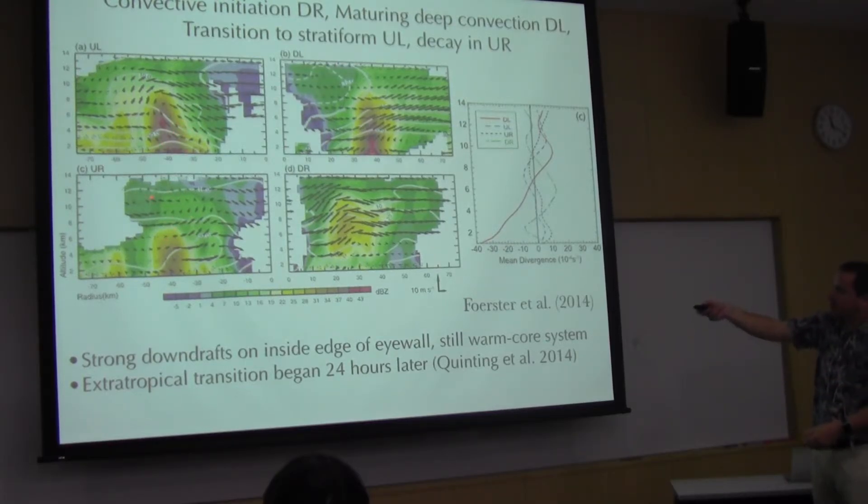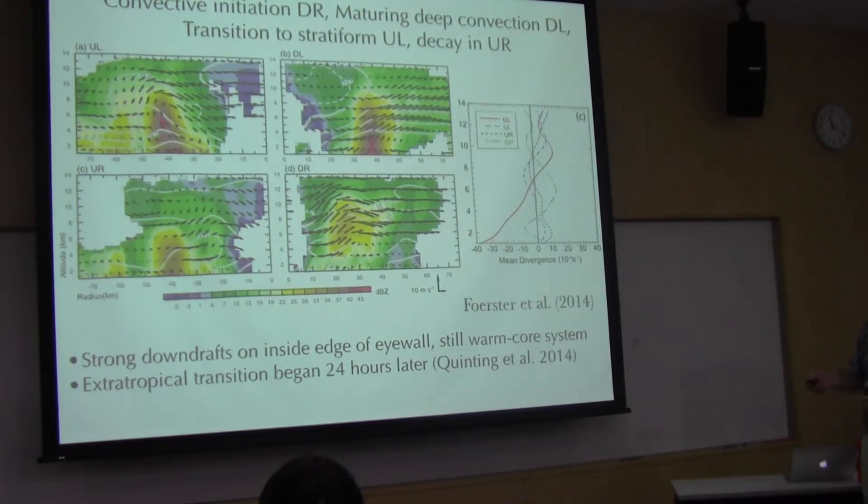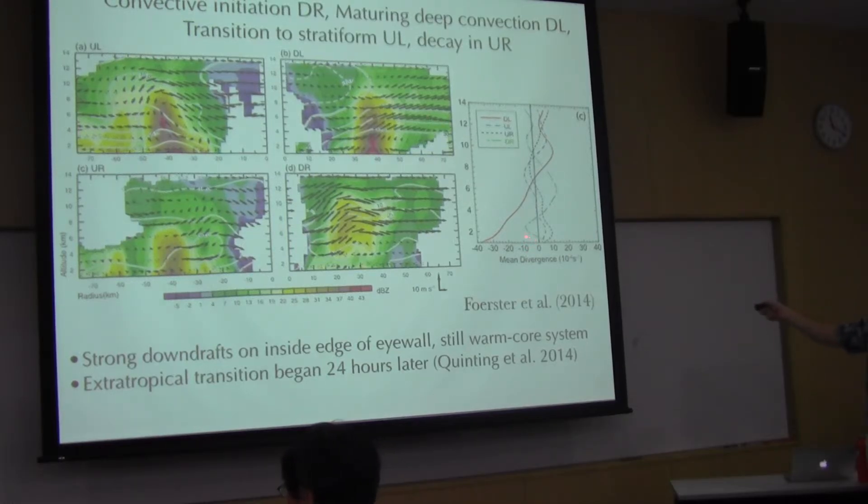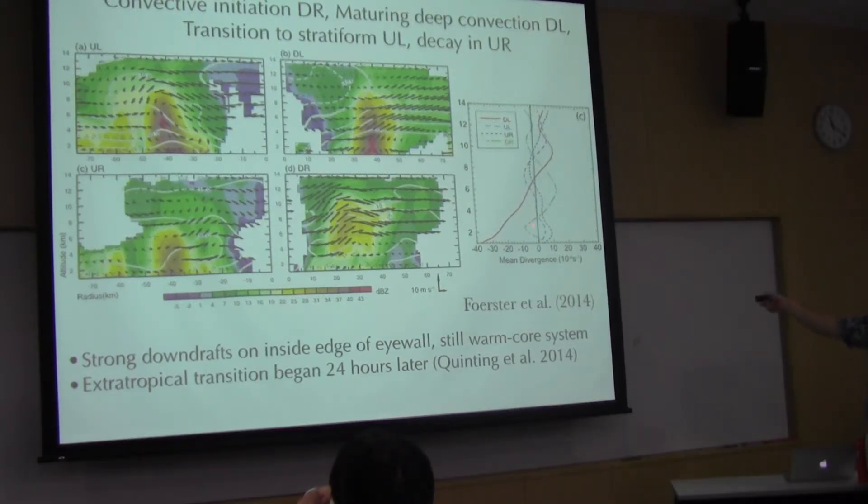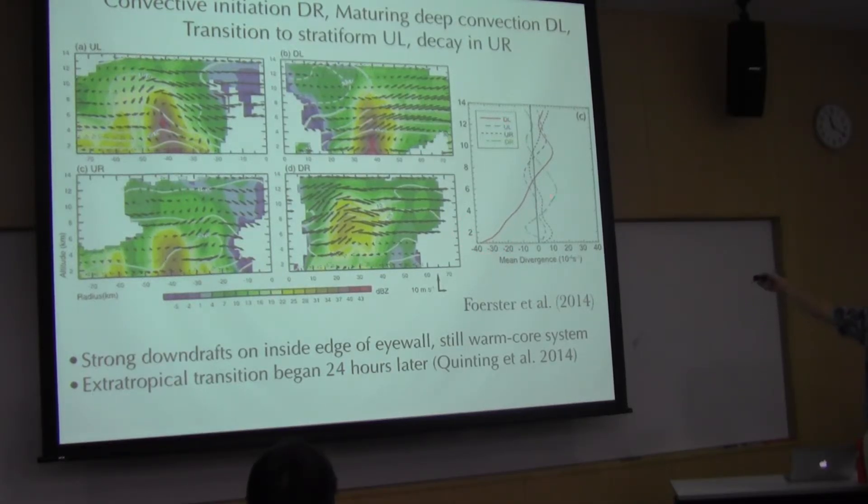As we go upshear right, the convection has continued to decay, and we see that stratiform signal is even more prevalent with that mid-level inflow, upward motion here and downward motion here. What we think we're seeing here is this classic convective life cycle, initiating downshear right, maturing as it goes around. The hydrometeors fall out as they go from convective to stratiform. If we look at that in terms of the divergence profiles, downshear right is the green one. We see low-level convergence and sort of mid-level divergence, suggestive of initiation and weak convection. But then here is where the convection is really strong - strong low-level convergence, upper-level divergence, classic convective signature. But then the upshear quadrants both show a stratiform signature - divergence at low levels, mid-level convergence, divergence aloft. Just like what we saw from the genesis case, but now in a mature eyewall.